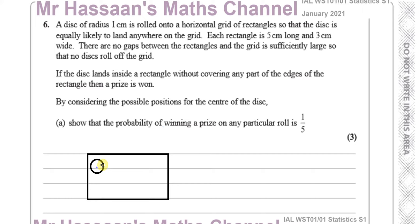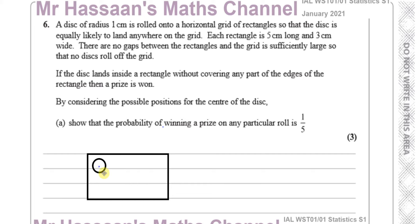Basically, if this circle lands like that, for example, the prize will be lost because it's covering the edges of the rectangle. So the circle has to land somewhere in the area around here, so that the edge doesn't go on the rectangle. We've got to figure out what that probability of it landing on that area is.